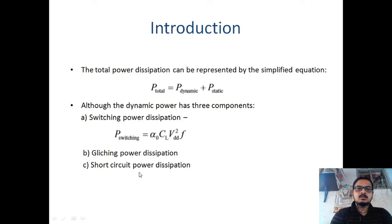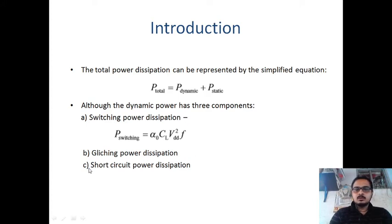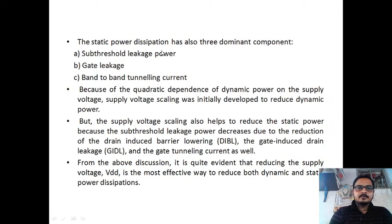In summary, dynamic power dissipation has three components: switching power dissipation (most predominant at 80–90%), glitching power dissipation (can be ignored), and short circuit power dissipation (decreased with quality input). Static power also has three dominant components.